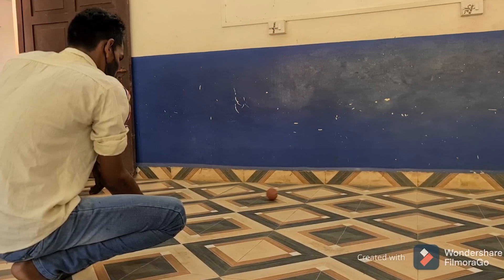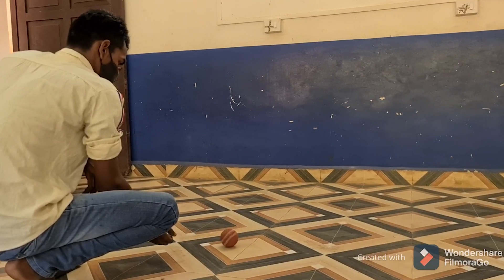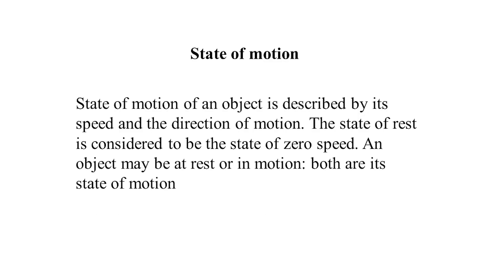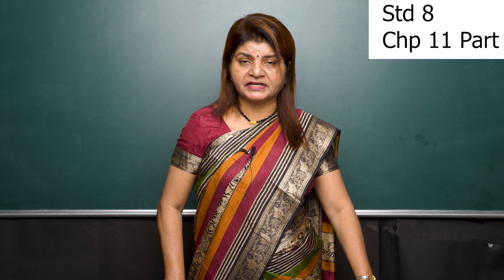When force is applied in the direction of an object's motion, the speed increases. If the force is applied opposite to the direction of motion, the speed decreases. A change in either the speed or direction of motion, or both, is described as a change in the state of motion. The state of motion is described by its speed and direction. The state of rest is considered to be the state of zero speed.